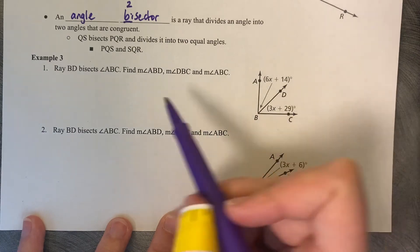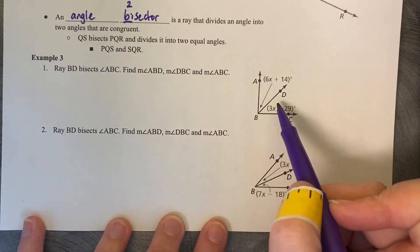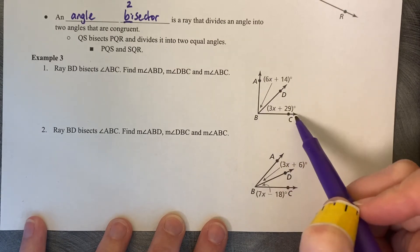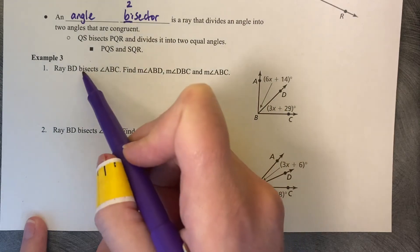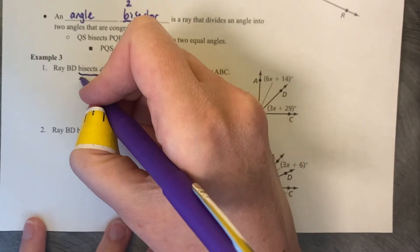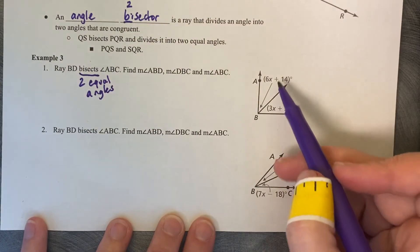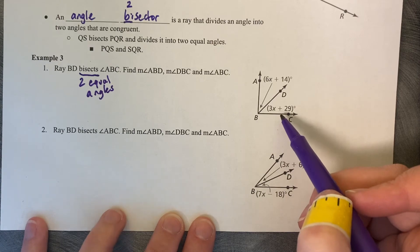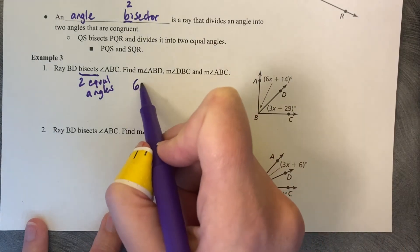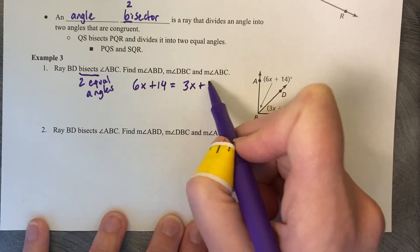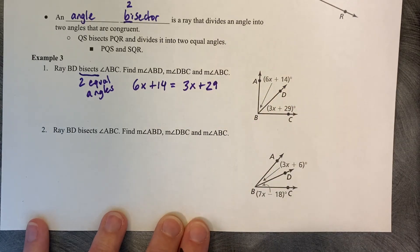Pause this video. Well, I'll help you get started, but then you can pause this video and try this example. Ray BD bisects ABC. So what does that mean about these two angles? If this is a bisector, two equal angles. So that means that these two angles are equal to each other. So I'll get you the setup. 6x plus 14 equals 3x plus 29. You go ahead and pause the video and solve for x and finish this problem. Also work on example number two, and then we'll compare.